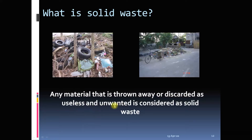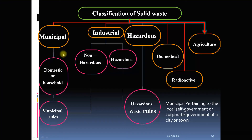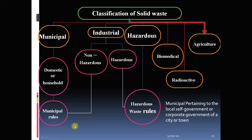Solid waste is anything which is discarded or thrown away that is useless — that is a very broad definition. You can classify solid waste based on various sources: municipal solid waste, industrial solid waste, hazardous solid waste, biomedical solid waste, radioactive solid waste, and agriculture solid waste. What we are interested in is municipal solid waste.